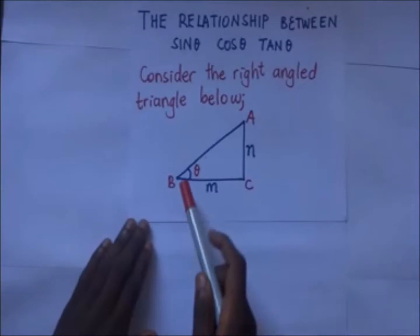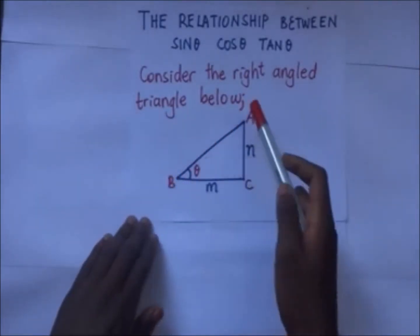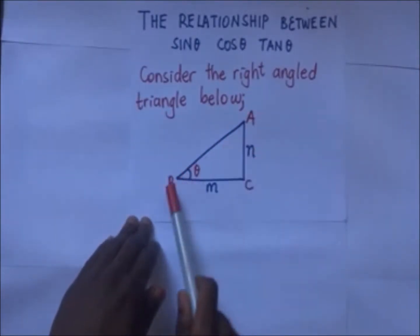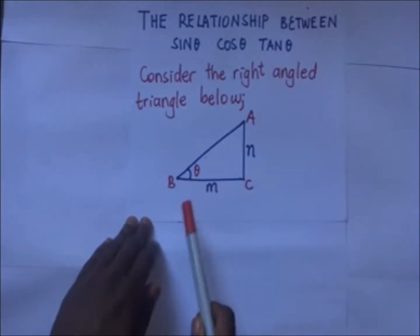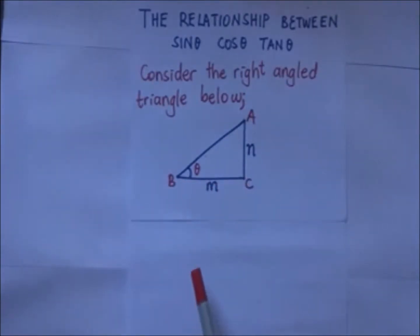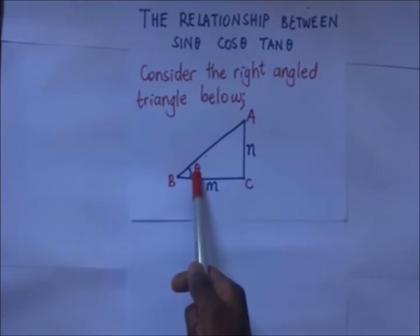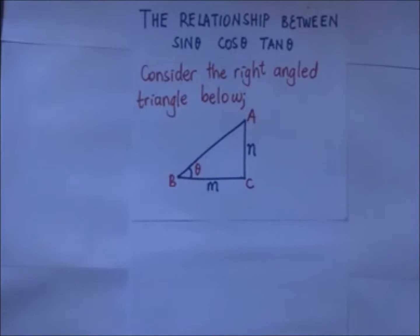This right angle triangle has got a hypotenuse AB, it has this side AC which we shall label N, and it has this side BC which we shall label M. Now we have an unknown angle here, theta.